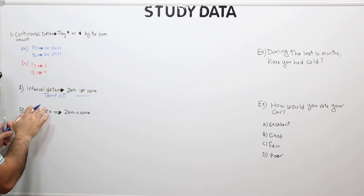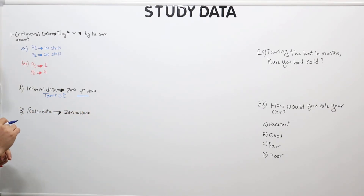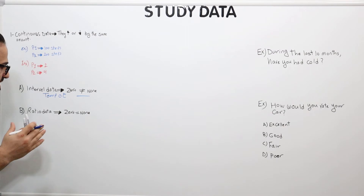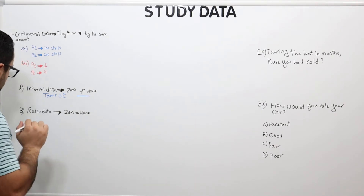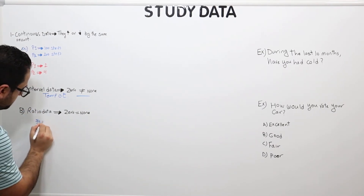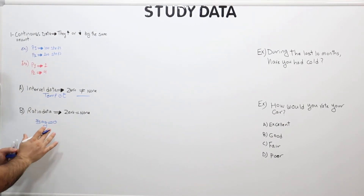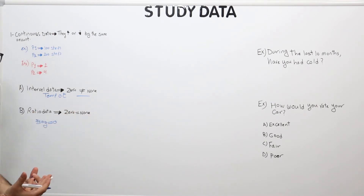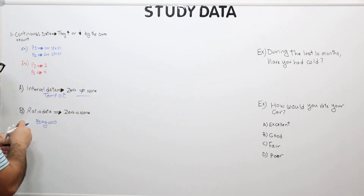For ratio data, zero does equal none. Let's take an example: you have a bag with four oranges and you give all four to your kids or friends. Now the bag has zero oranges, and this is where zero equals none — because there are no oranges in the bag. That is the difference between interval data and ratio data.